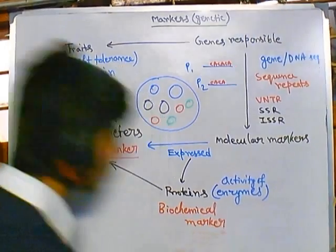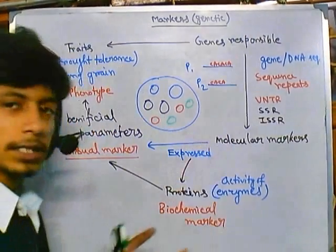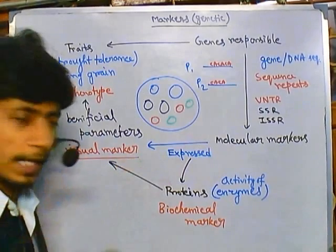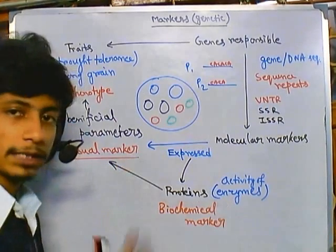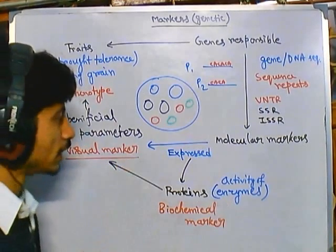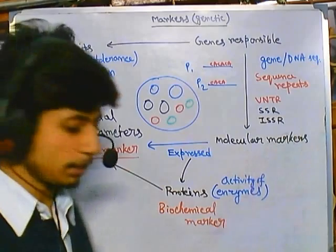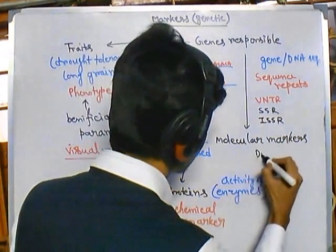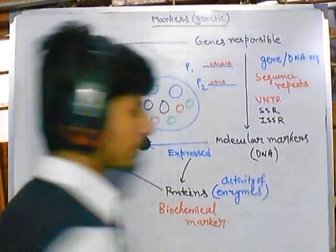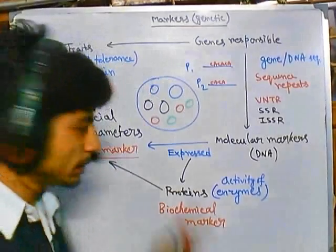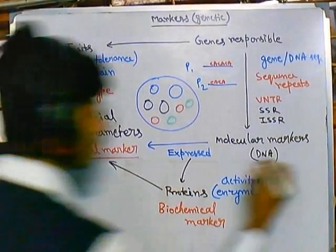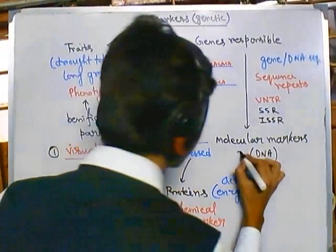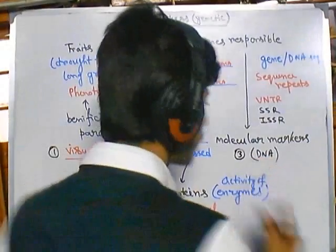So we get three types of markers: a visual marker which we can simply visualize; a biochemical marker which is the expression of gene products; and the molecular marker which is simply DNA sequences. These are the three types of markers we are talking about.